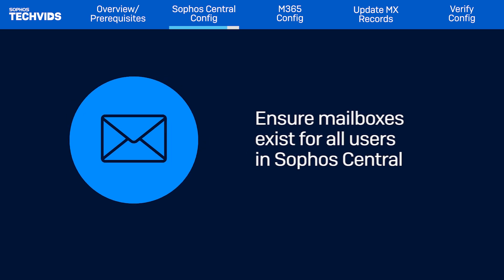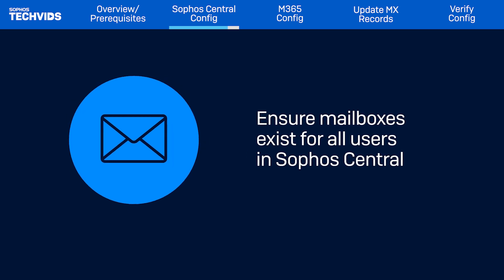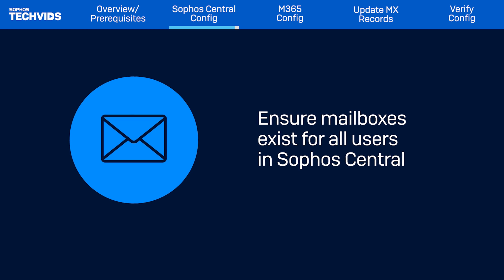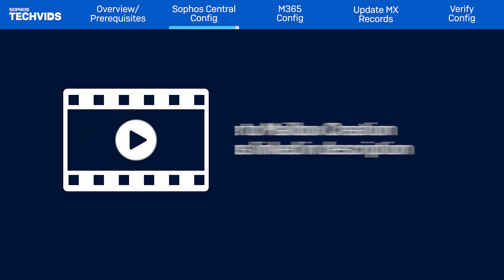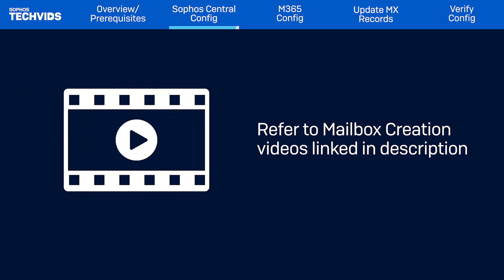Next, ensure that there are mailboxes for your users present in Sophos Central. This is vital for Sophos Email's functionality. Any user that does not have a corresponding mailbox or alias within Sophos Email will be rejected. Mailboxes can be set up in several ways — refer to the videos linked in the description for detailed steps.